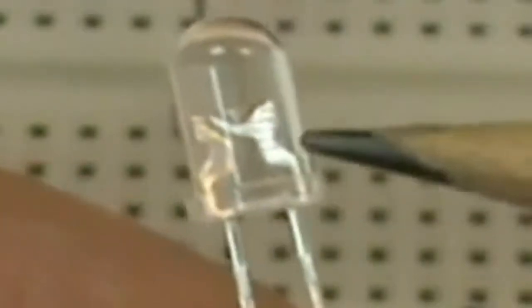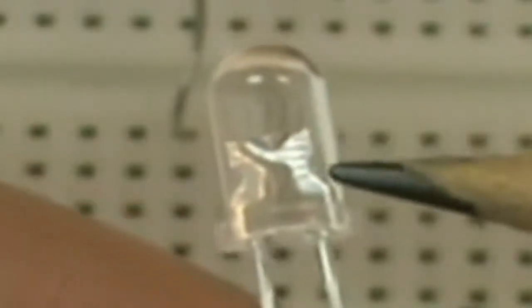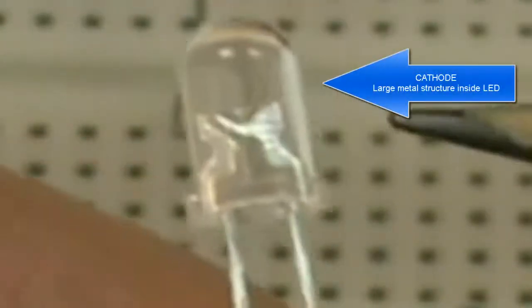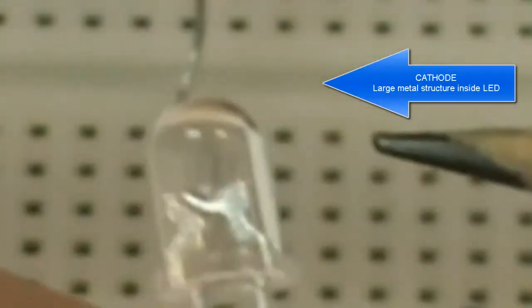So the best way to tell, I find, is just to look for that big large chunk of metal which is the base of the LED and that's always for the negative. I haven't seen any exceptions to that. And that's one way to tell.